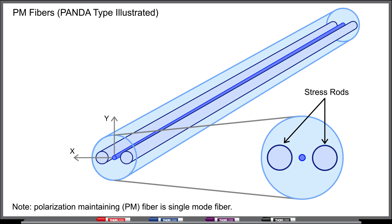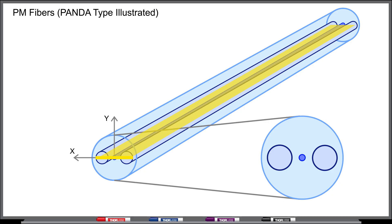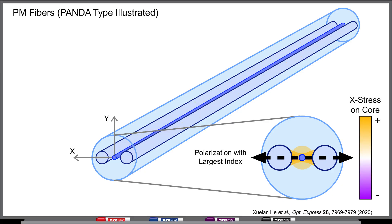A common approach to create polarization-maintaining fiber is to include two stress rods in the cladding. These stress rods are separated by 180 degrees, run along the length of the fiber, and exert stress on the fiber's core.